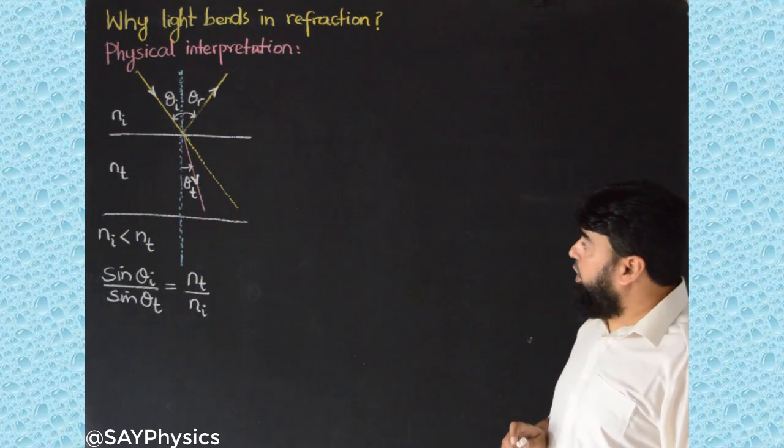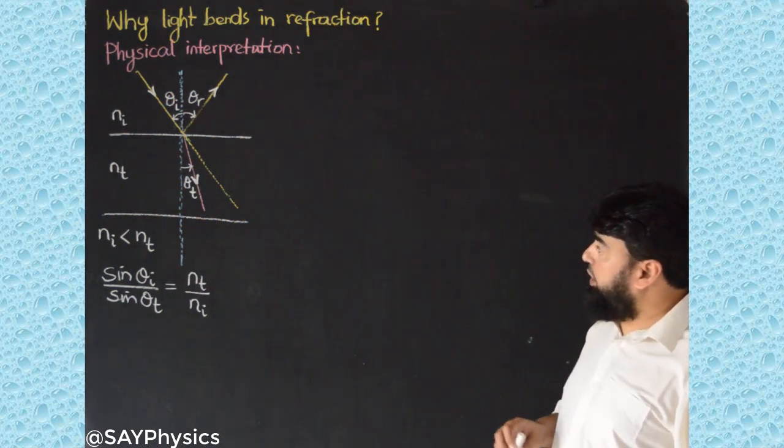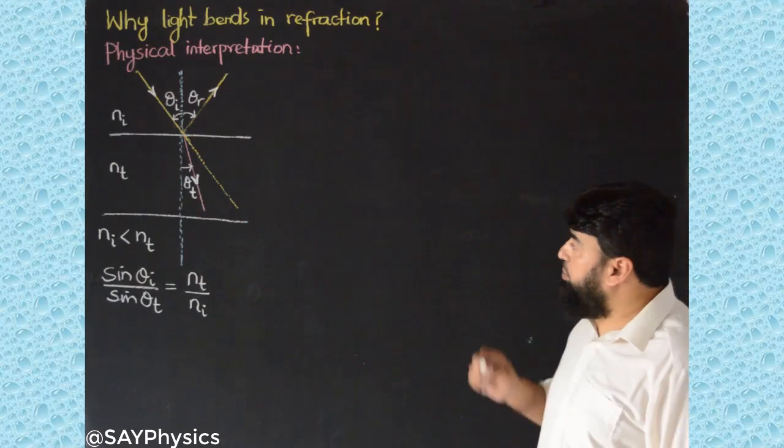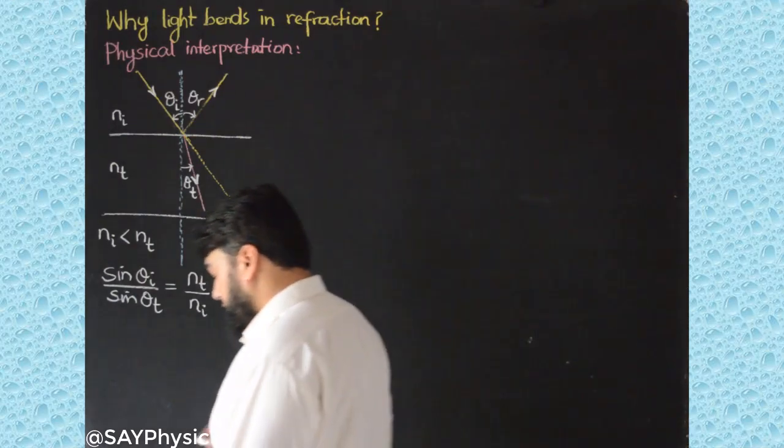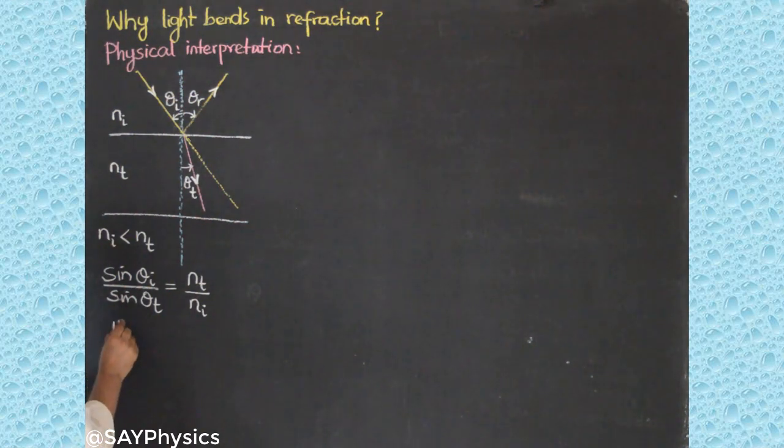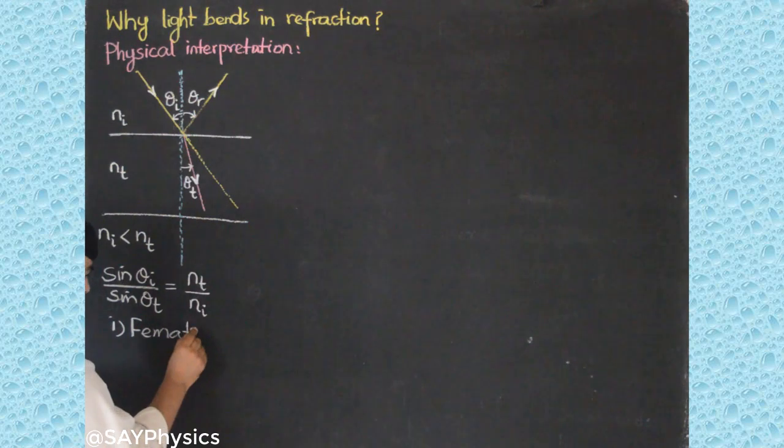If we look at the internet, especially YouTube, then we find for this bending of light some explanations. The very first one is Fermat's Principle.